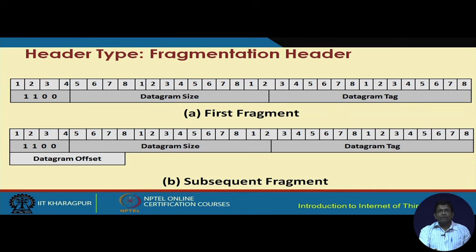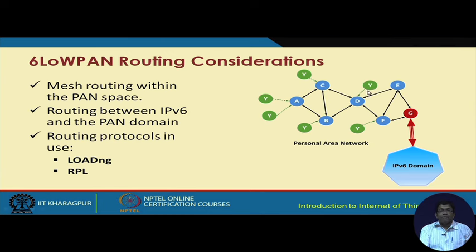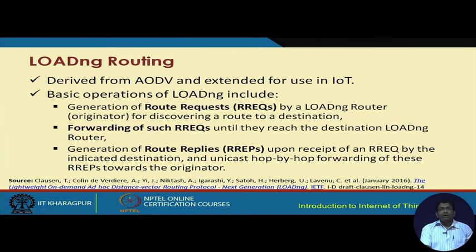Because 6LoWPAN involves a strong network layer component, it takes care of routing. The most important type is mesh-based routing, used in the context of a PAN topology. Routing is based on the IPv6 protocol within the personal area network domain. There are two routing protocols used in 6LoWPAN: the LOAD-ng protocol and the RPL protocol. A coordinator or gateway connects the PAN to the IPv6-based internet.